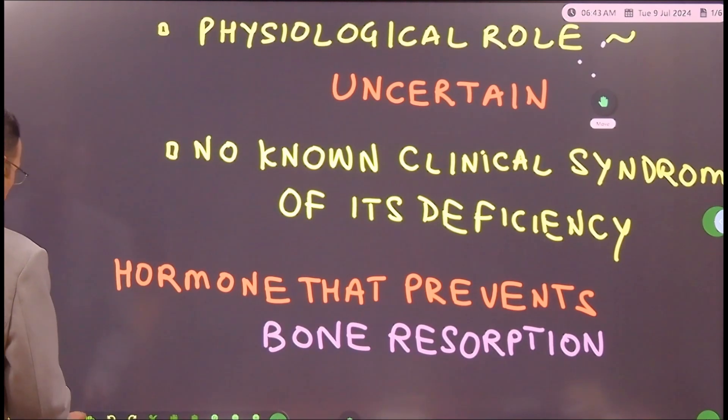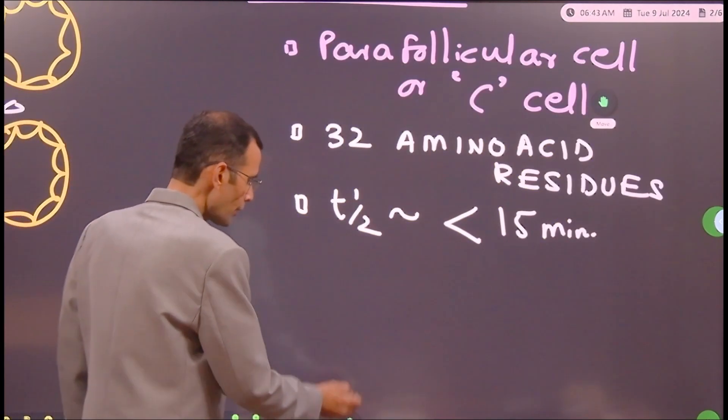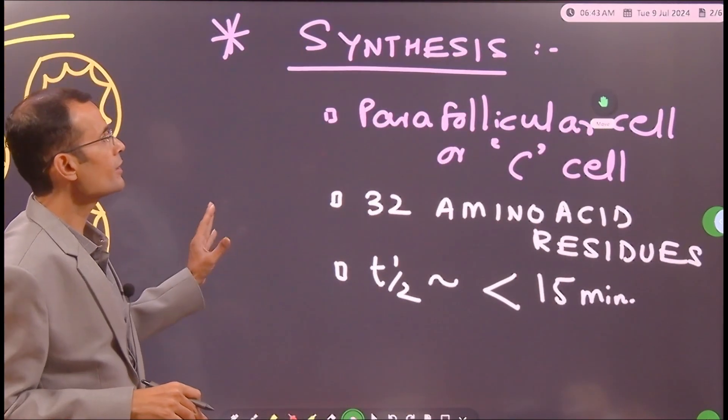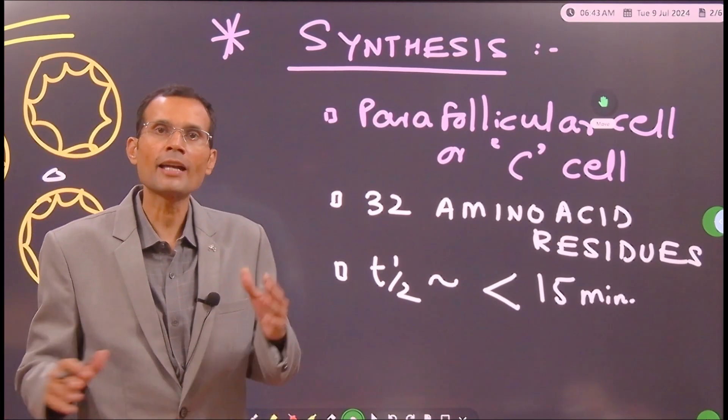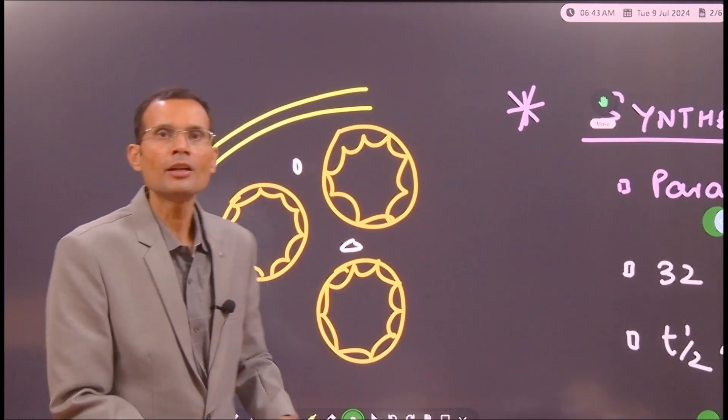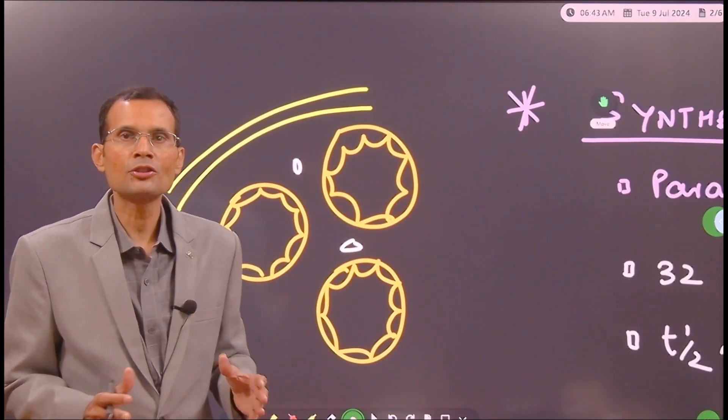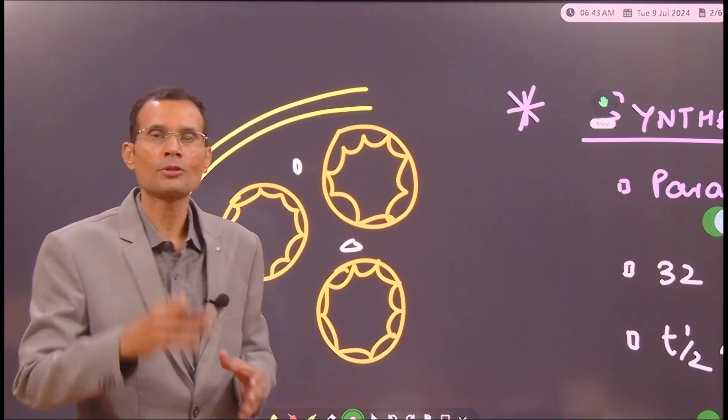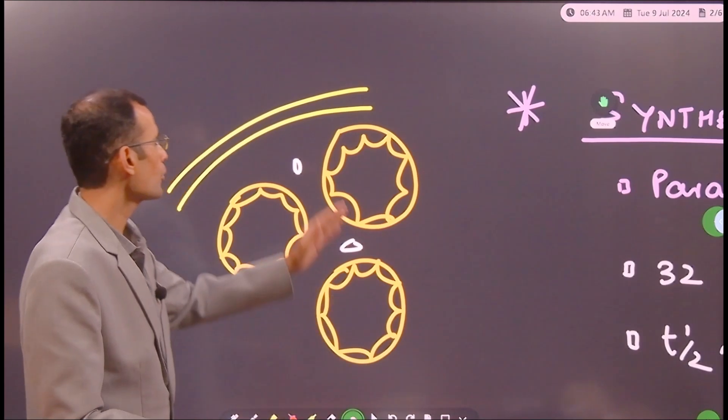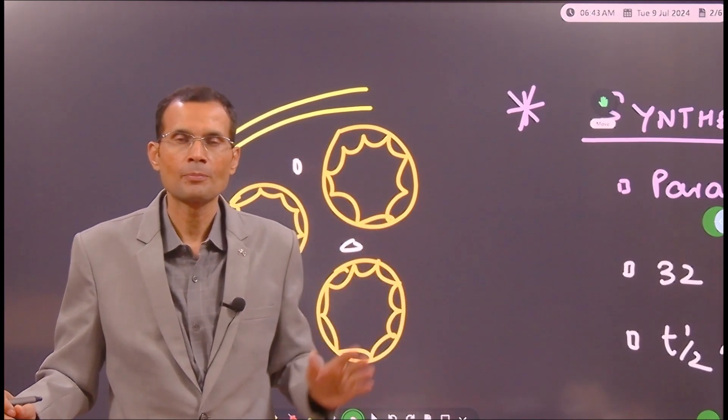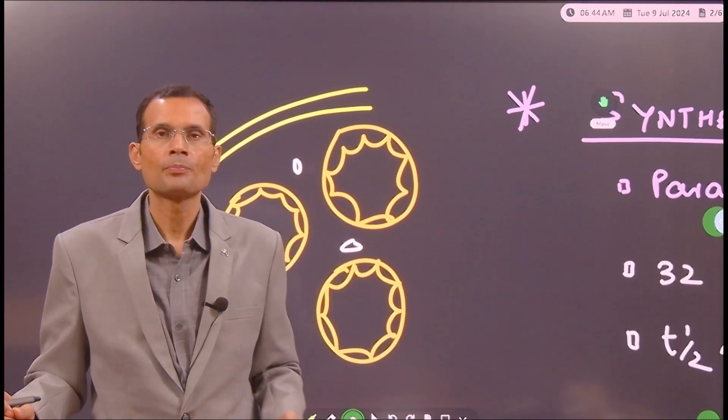Let us know more about this particular unique hormone - where is it formed, how is it secreted. Synthesis of this hormone is in the thyroid gland. But where? You know the structure of the thyroid - it consists of follicles and inside the follicles there is synthesis of thyroid hormones.